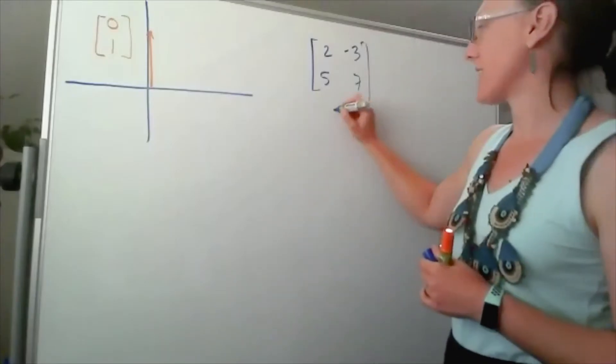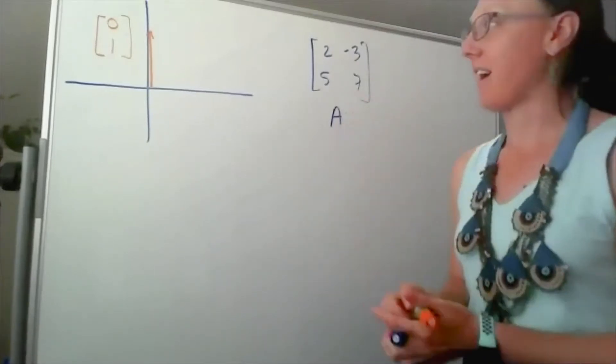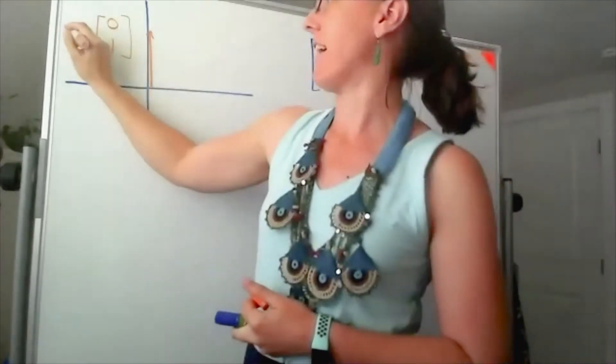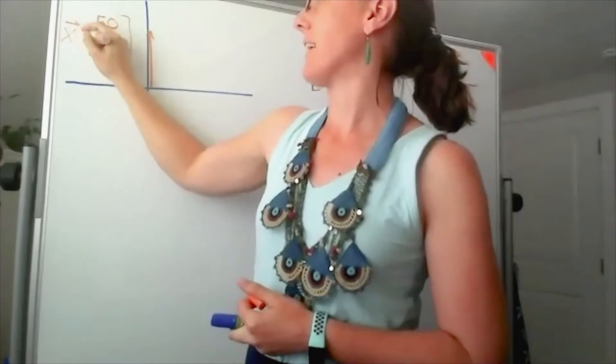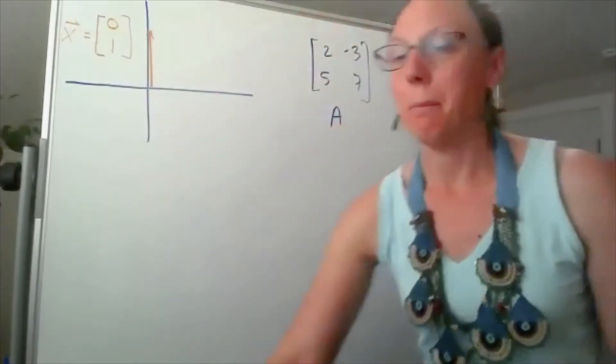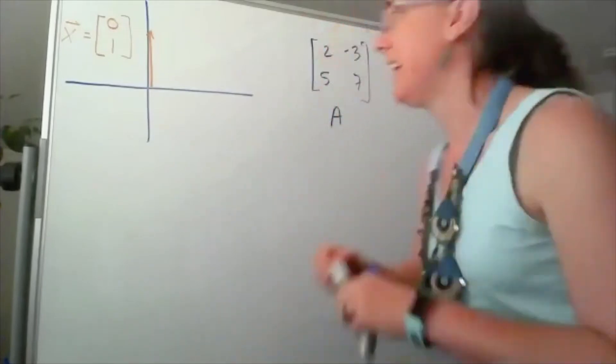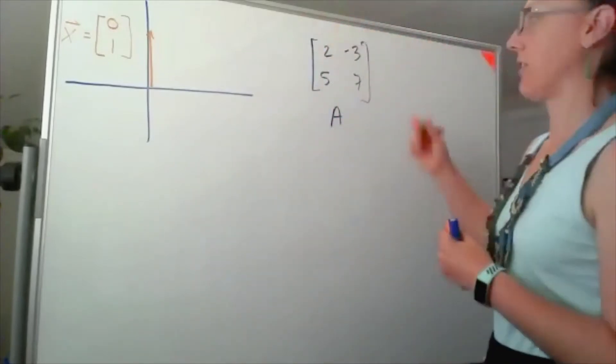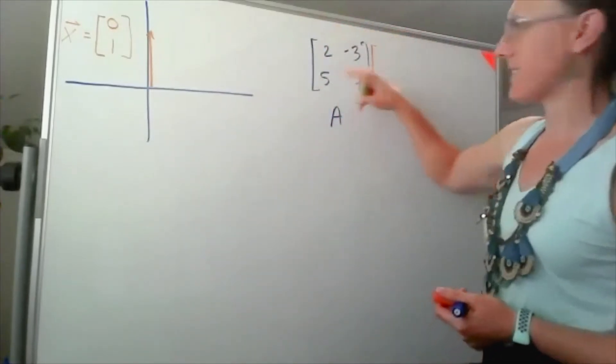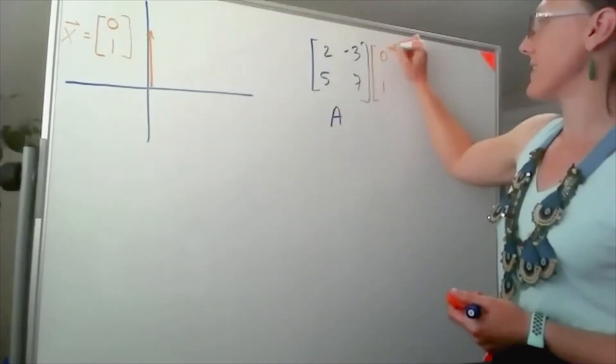So if this is the matrix A and I call this vector x, then multiplying A by that vector x is going to result in a new vector. So I'm going to take this matrix and multiply by 0, 1.